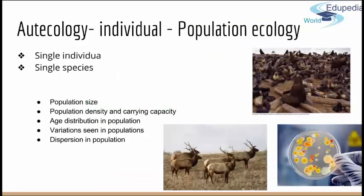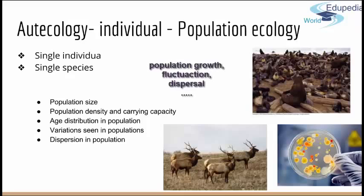Basically, ecosystem ecology covers all interactions happening within an ecosystem — mostly interactions between living and non-living components. On the other hand, autoecology takes a more individual approach, focusing on a single population of a single species. It deals with the dynamics of species populations and how these populations interact with the environment.